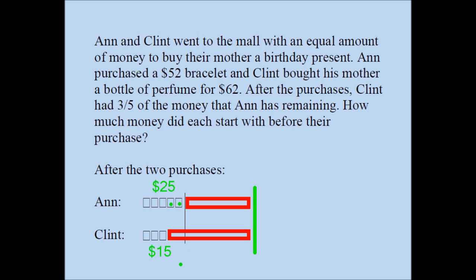Now this is a very important and crucial step, and fairly challenging to understand, so I'm going to go over it once again. We decided that Clint had three-fifths of the money that Ann had, so if Ann had 5 bits, Clint must have had 3 bits. We know Clint spent more money and Ann spent less, so we add two rectangles so the entire length of Ann's amount equals the entire length of Clint's amount. The difference between what Ann and Clint spent is $10, so those two boxes equal $10, meaning each box equals $5. Ann was left with 5 times $5 = $25, and Clint was left with 3 times $5 = $15.